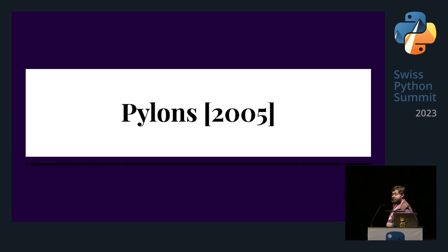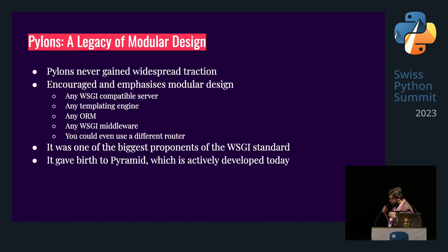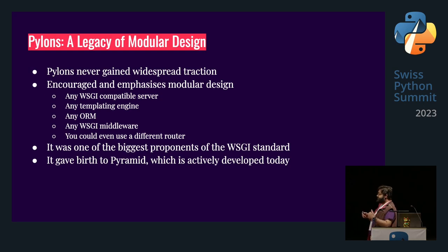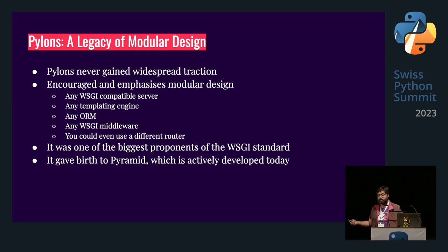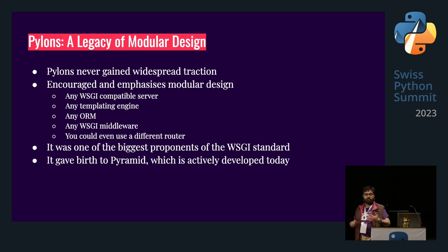There's another one — Pylons in 2005. I'm not going to get into Pylons, but the impact it had was promoting a lot of good things in the Python ecosystem: you could use any WSGI-compatible server, any templating engine, any ORM, any WSGI middleware, and you could even swap out the router. A lot of the things we take for granted — being able to use anything with Flask, Bottle, or FastAPI — they kind of pioneered it.